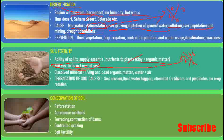Soil contains dissolved material, living and dead organic matter, water, and air. Soil degradation affects soil fertility. Causes of soil degradation include flooding, waterlogging, chemical fertilizers and pesticides.